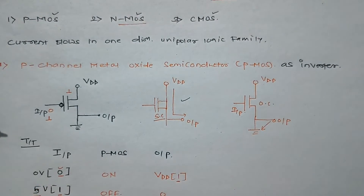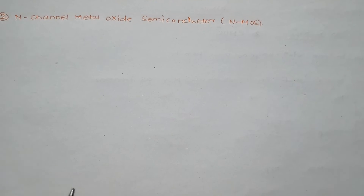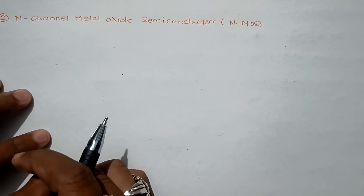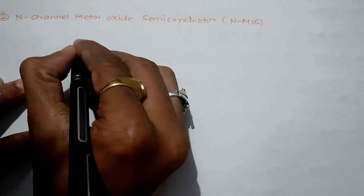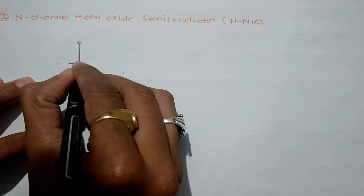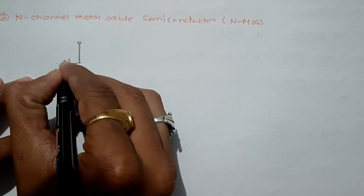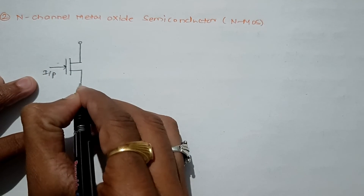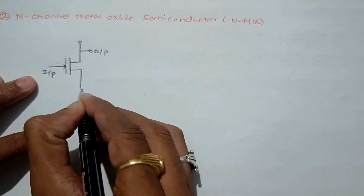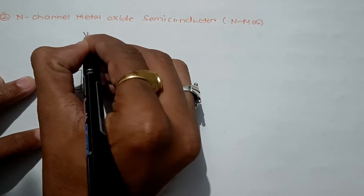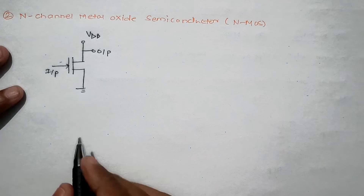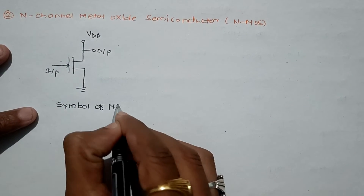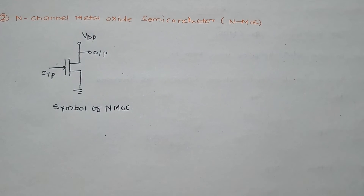Now we come to the second category, called NMOS — N-channel Metal Oxide Semiconductor. Symbolically, the NMOS is connected with the input on the side, output taken at the top, the bottom is grounded, and VDD is at the top. This is the symbolic representation of NMOS.